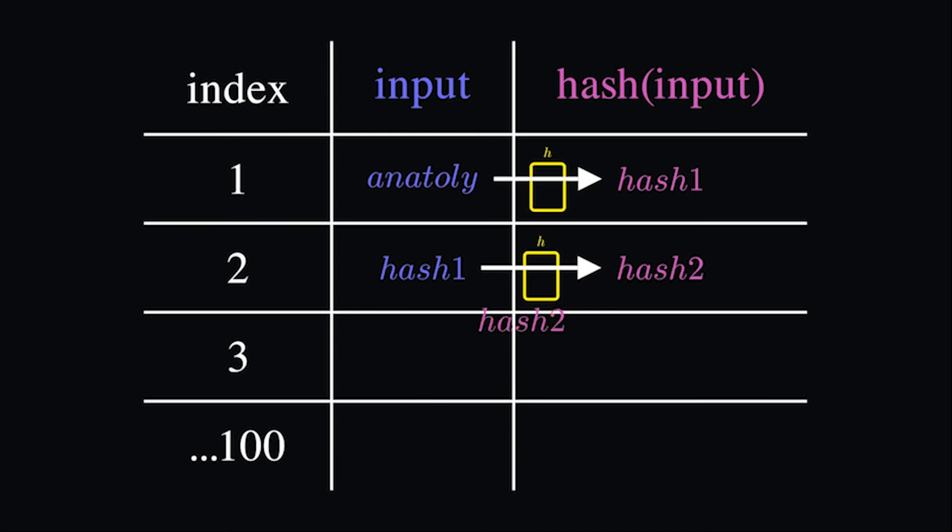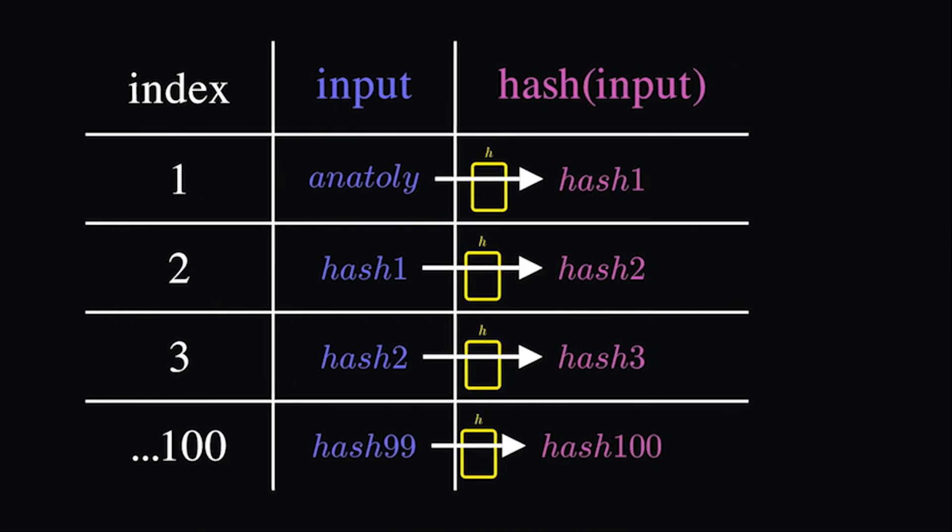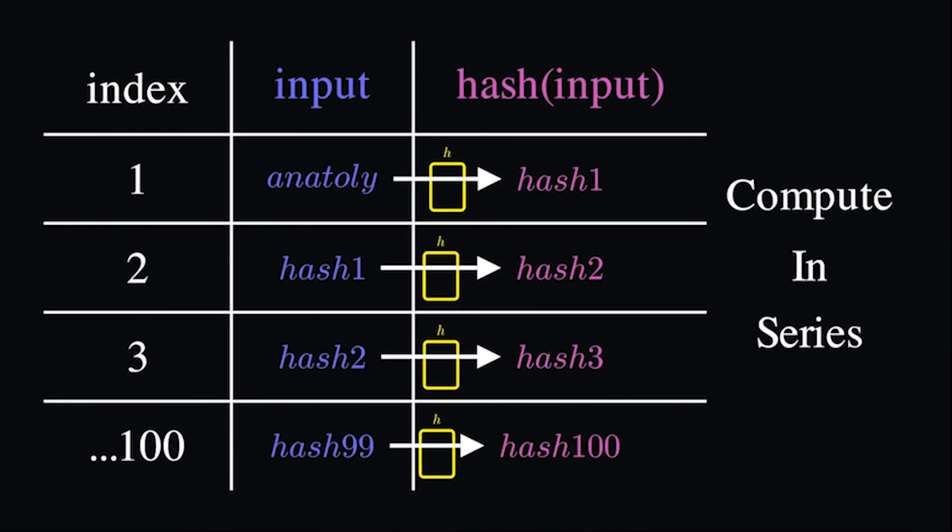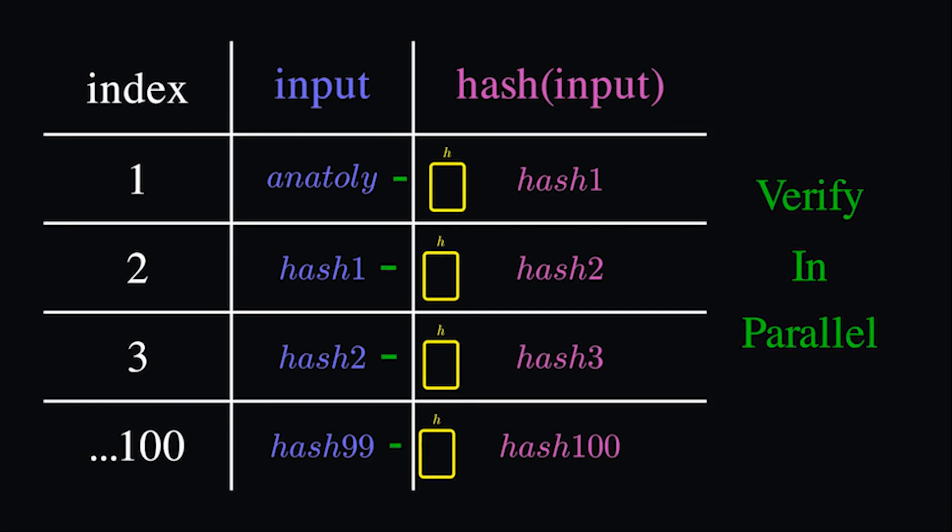Due to preimage resistance, we can only compute this chain in series on one core. We always need to know hash k to compute hash k plus 1. So no one can generate a proof of history sequence faster than running a single core on a fast computer. But, given the data up front, observers can verify all hashes are correct in parallel.